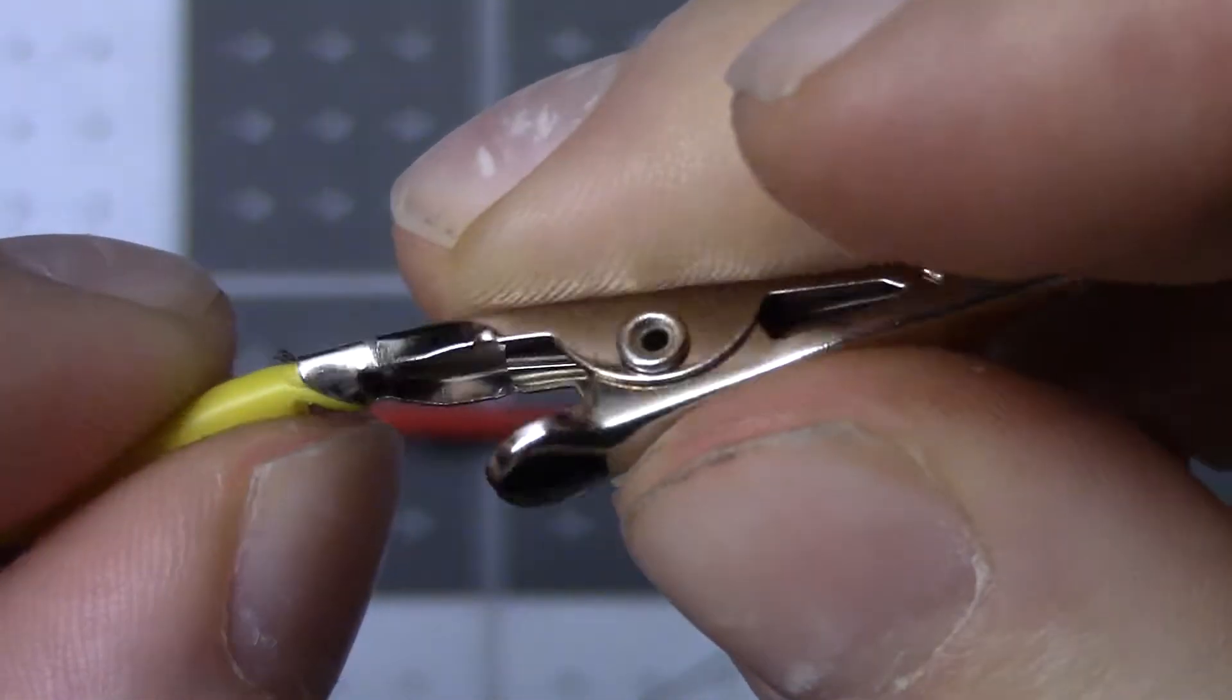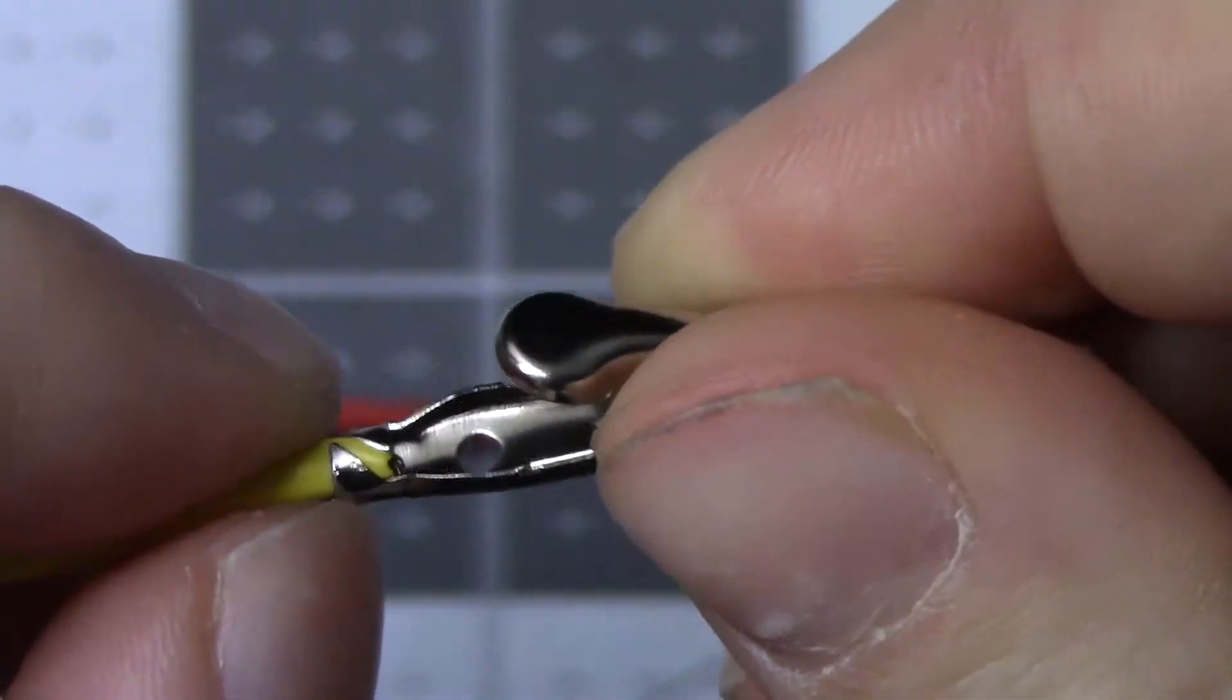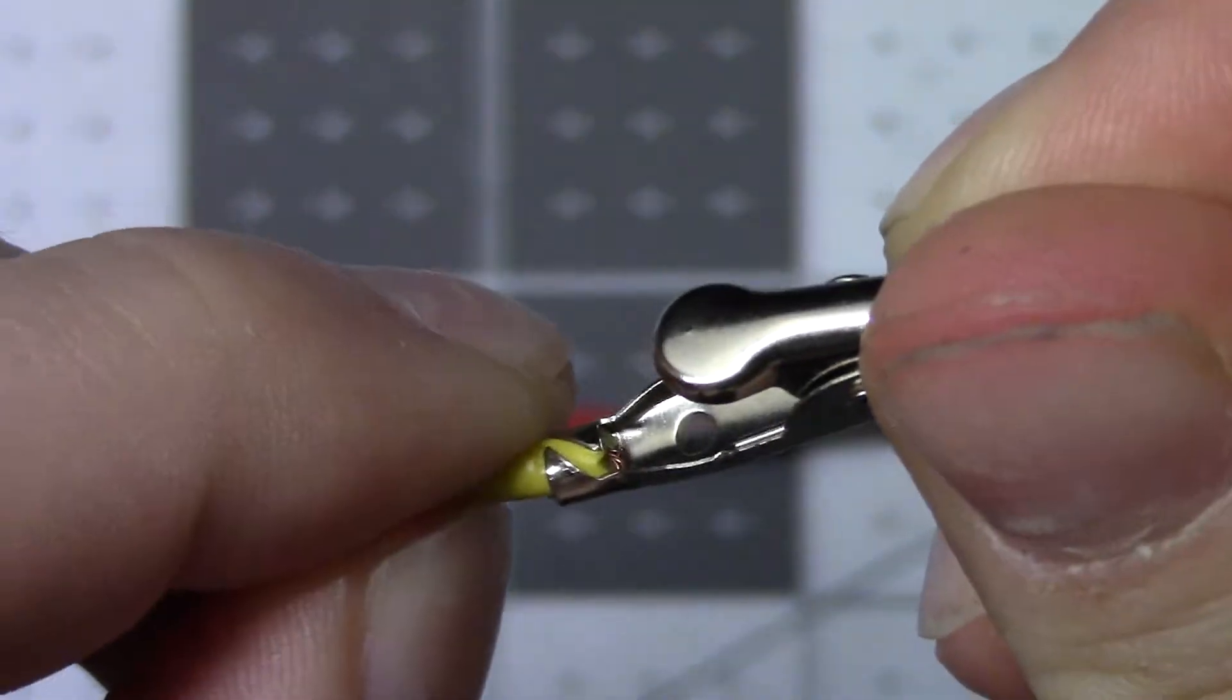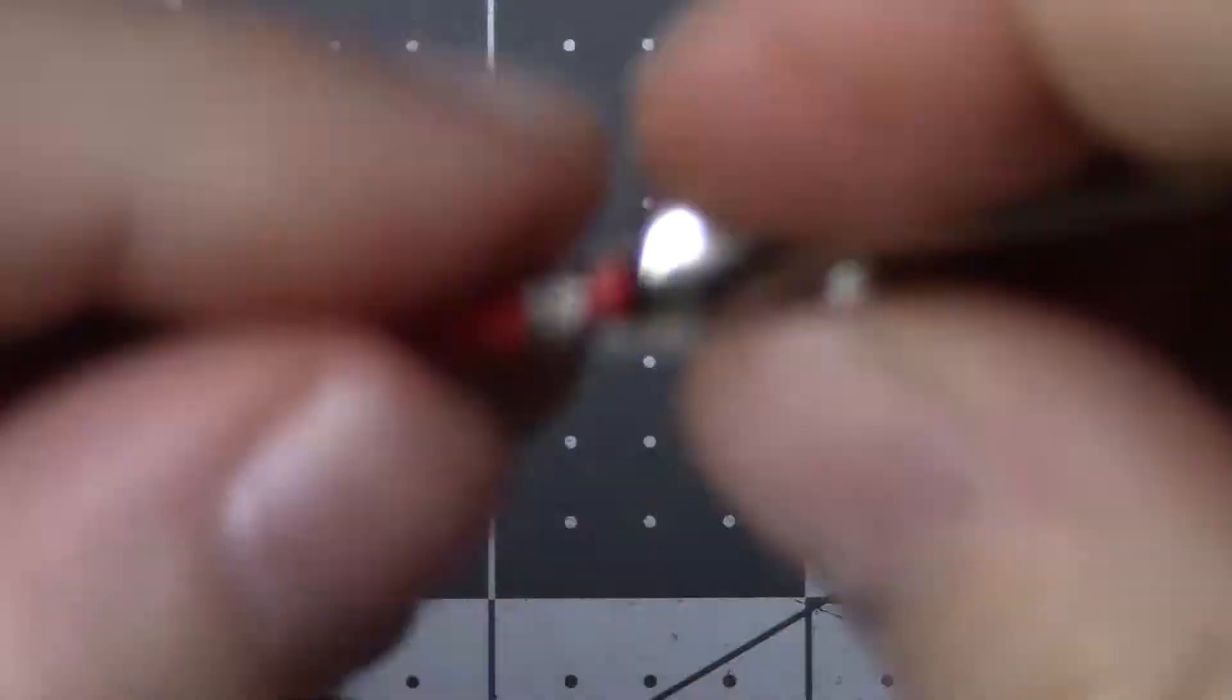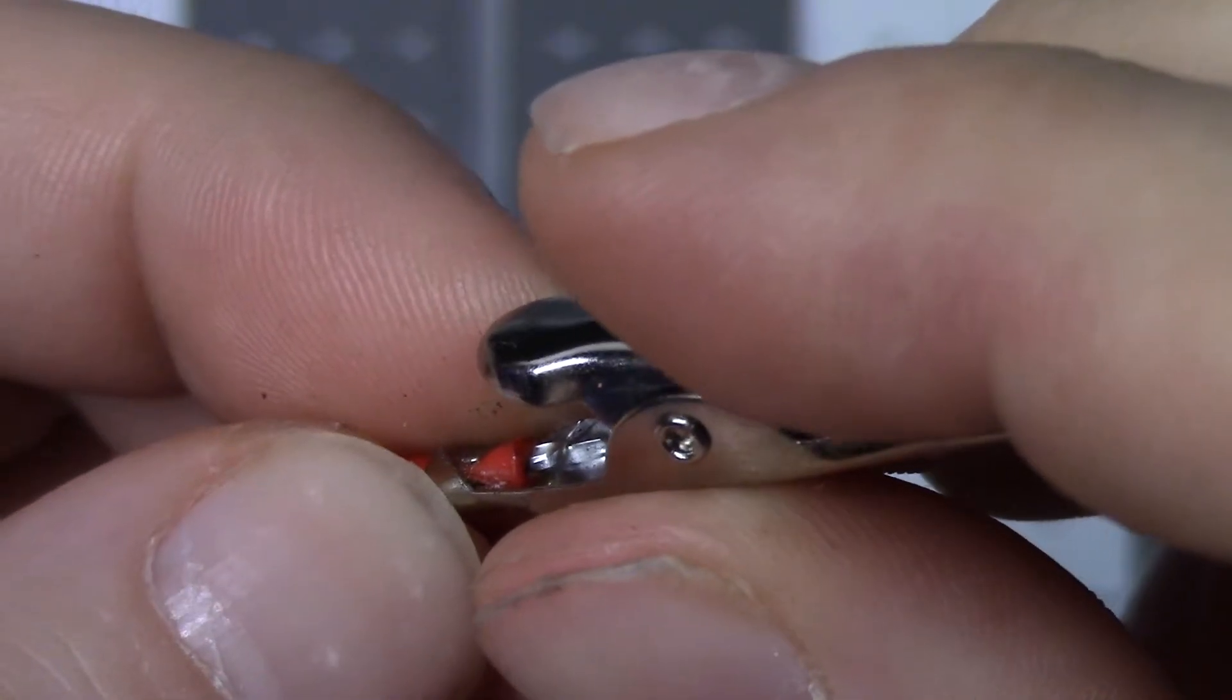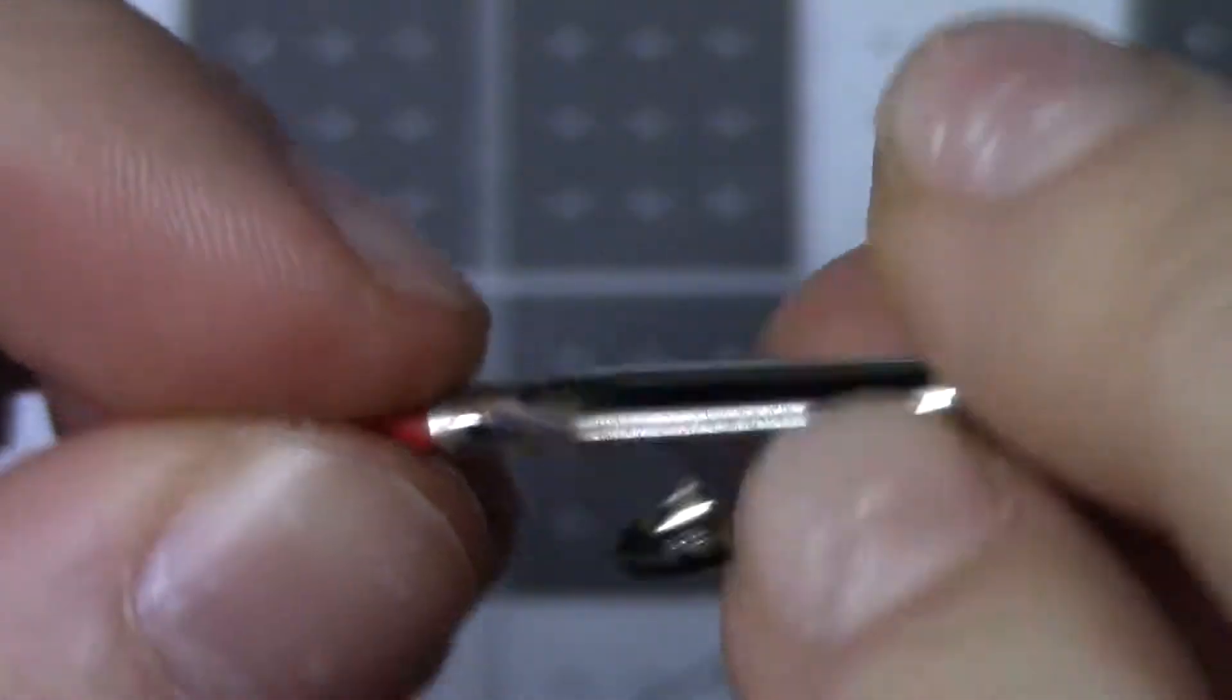I mean, they don't even solder them, do they? I mean, that one's not even soldered. It's just supposed to be crimped underneath it. Or here, you can actually see the solder right at the tip of my finger, where they actually soldered the wire to the clip.